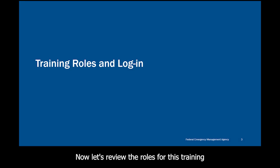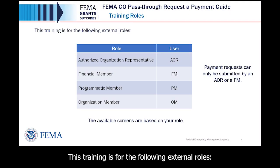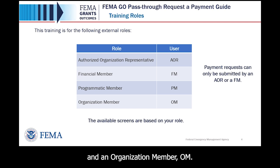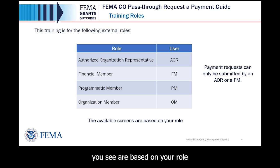Now let's review the roles for this training and how to log in as an external user. This training is for the following external roles: an Authorized Organization Representative (AOR), a Financial Member (FM), a Programmatic Member (PM), and an Organization Member (OM). Payment requests can only be submitted by an AOR or a FM. Please remember the available screens you see are based on your role and may differ from the screens displayed.